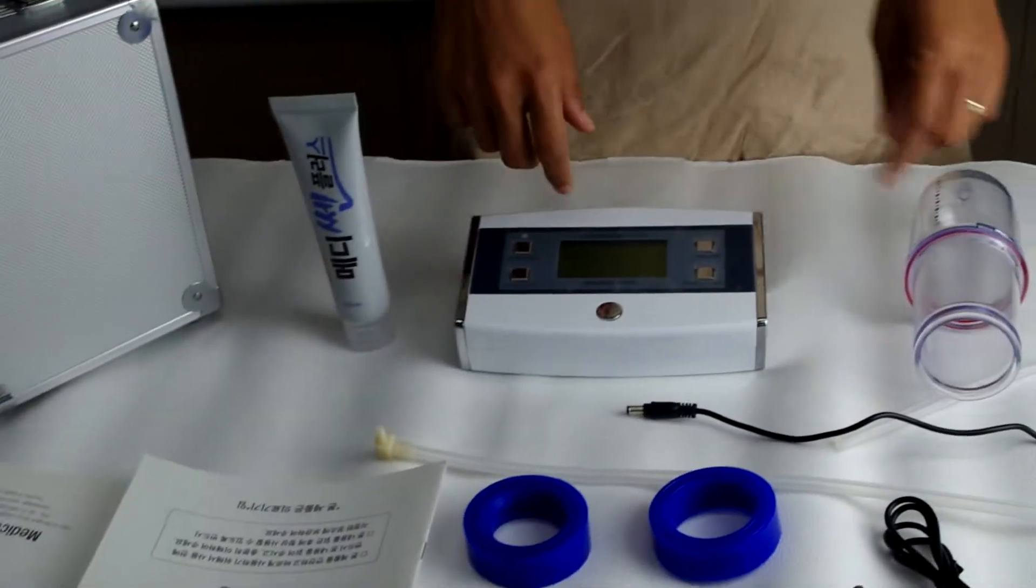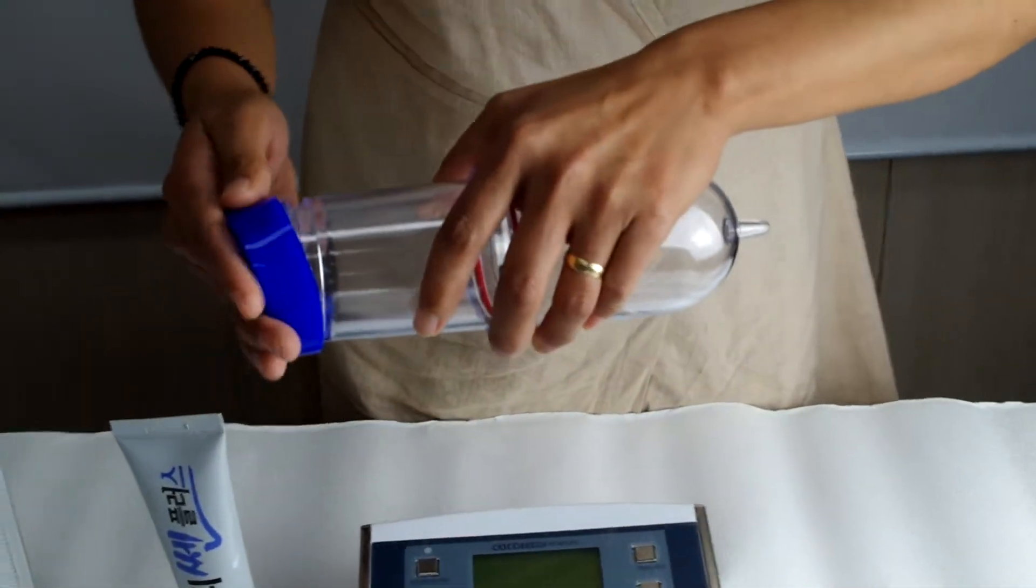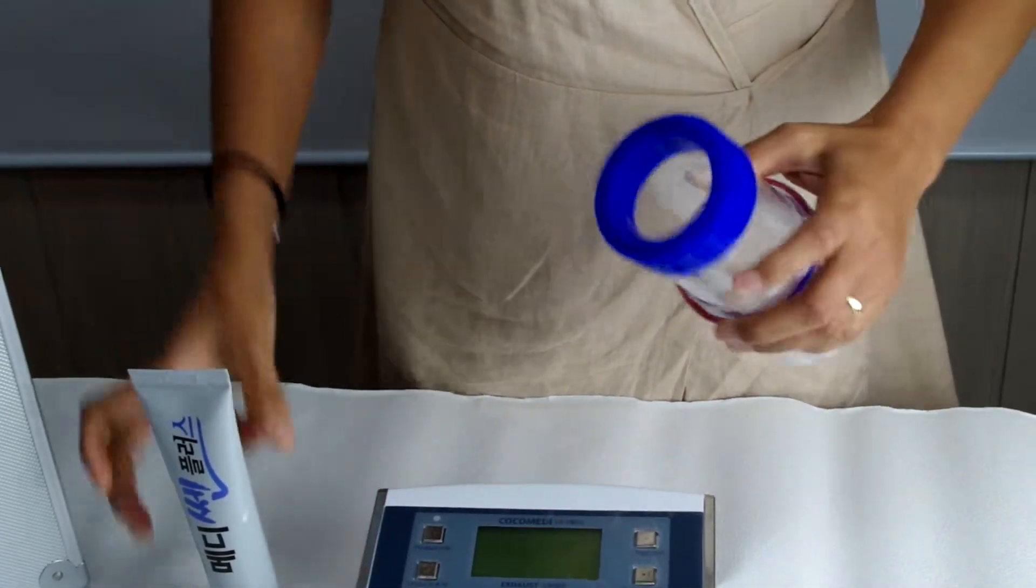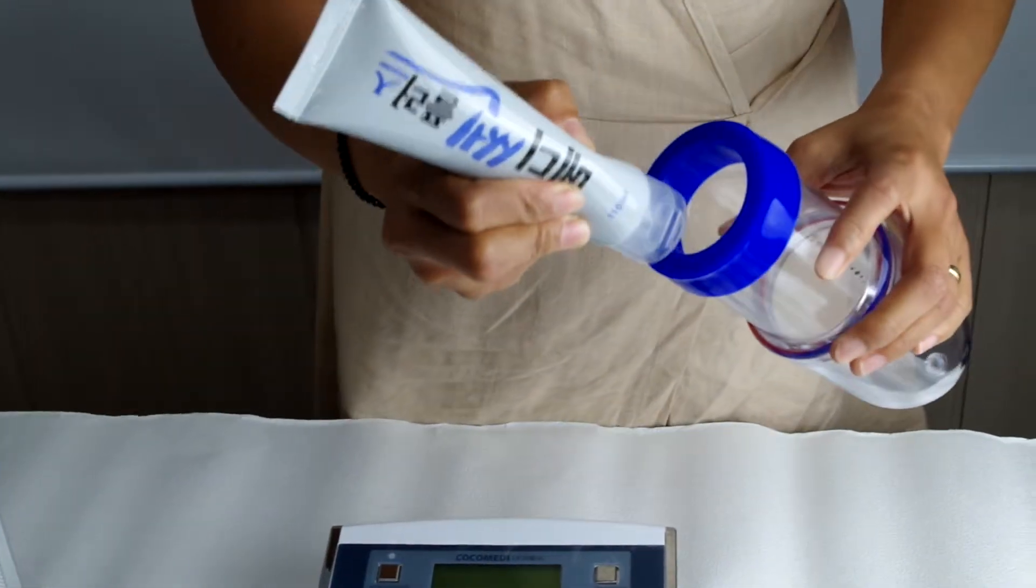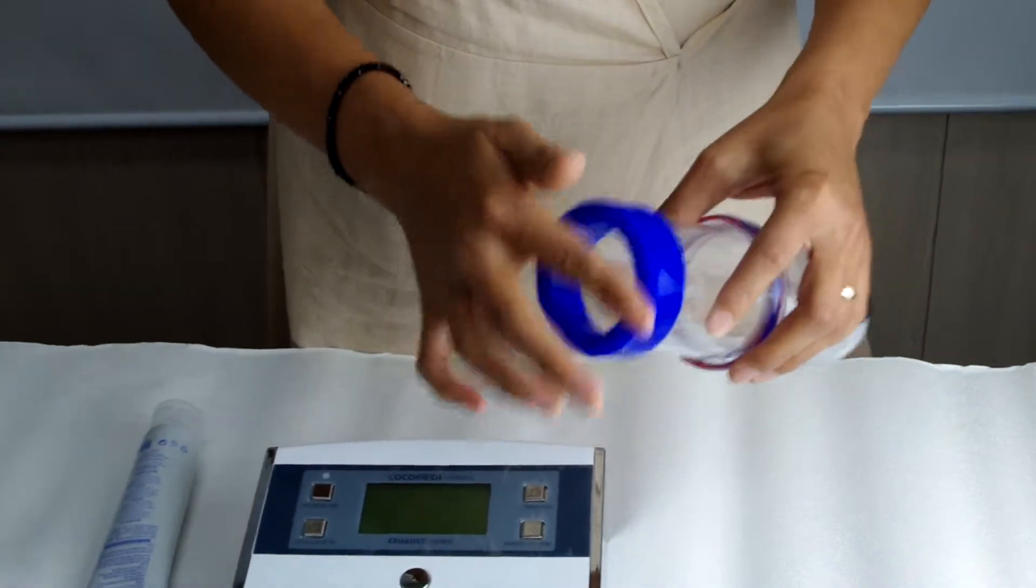First, you have to install the cylinder and the protector for everyday use. Put the gel on the top and inside of the protector and spread it.